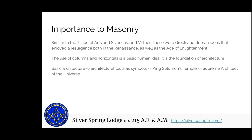In our lectures we talk about the seven liberal arts and sciences, the cardinal and theological virtues, and the orders of architecture. What these all have in common is that they were Greek and Roman ideas that picked up again in the Renaissance and then again in the Age of Enlightenment. The idea of using columns and horizontals to build a covering or shelter is an idea you see throughout the world and throughout all ages — it's a basic human idea and the foundation of architecture.